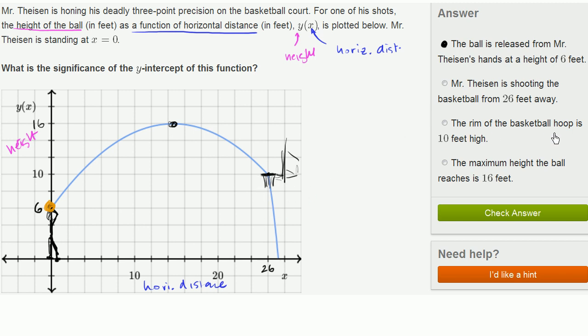The rim of the basketball hoop is 10 feet high. Once again, that's true. You can see it right over there. But that's not the significance of the y-intercept. The maximum height the ball reaches is 16 feet. Well, once again, that is true. But that's the significance of this maximum point on the curve. That's not the significance of the y-intercept. So we'll go with this first choice.